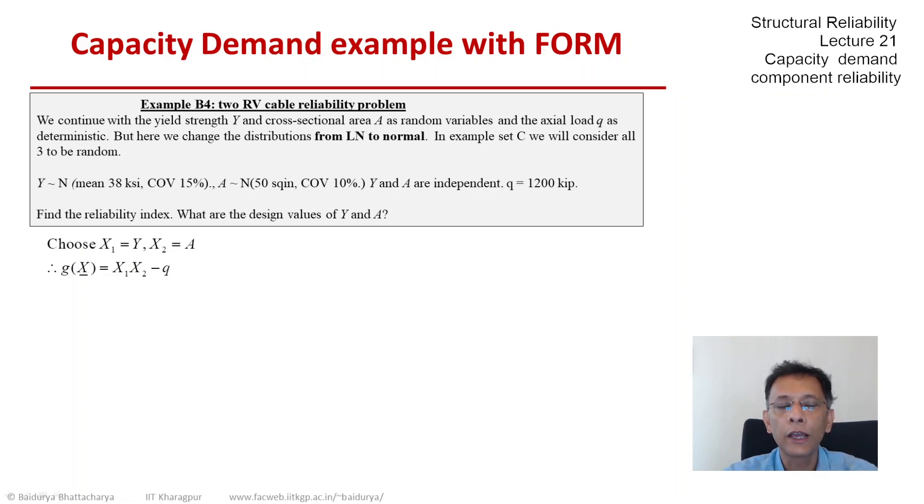First of all, you cannot take logarithm of a normal random variable because it takes on negative values. And secondly, even if we truncated it at zero, it still wouldn't help us because that would not give us a known distribution or density function. So we have to accept that we are going to deal with a non-linear limit state.